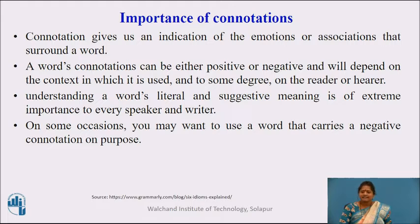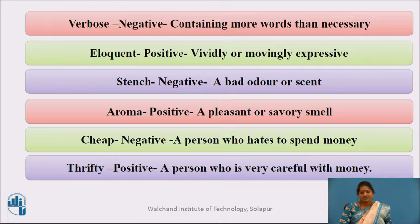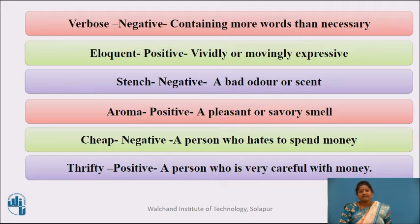Connotation gives us an indication of the emotions or associations that surround a word. A word's connotations can be either positive or negative and will depend on the context in which it is used, and to some degree on the reader and hearer. On some occasions you may want to use a word that carries a negative connotation on purpose. It is of utmost importance that we choose our words with care, as the choice of words can change the meaning of a sentence significantly. For example, 'scrawny' carries a negative connotation whereas 'slender' carries a positive connotation to describe a woman. 'Verbose' has a negative connotation meaning containing more words than necessary, whereas 'eloquent' carries positive connotations meaning vividly or movingly expressive.